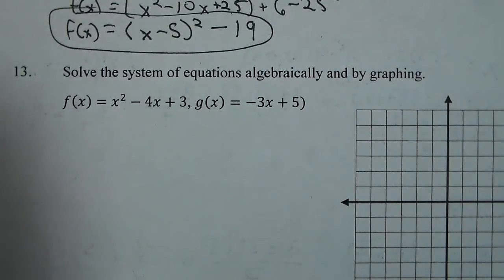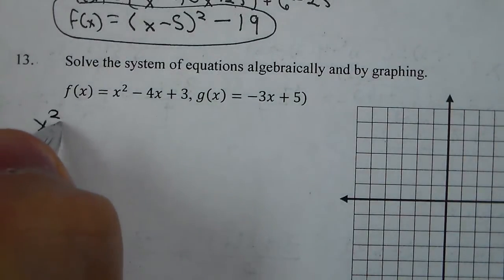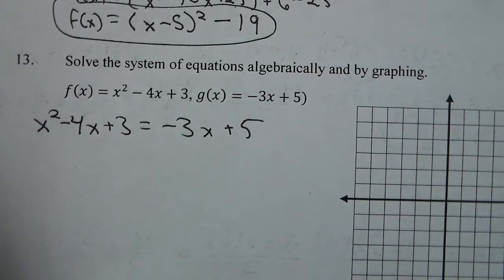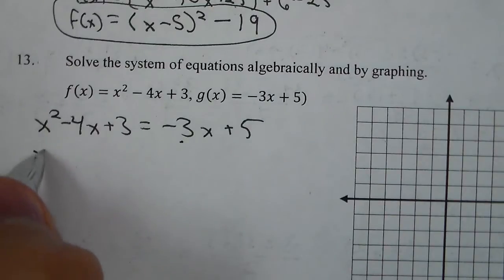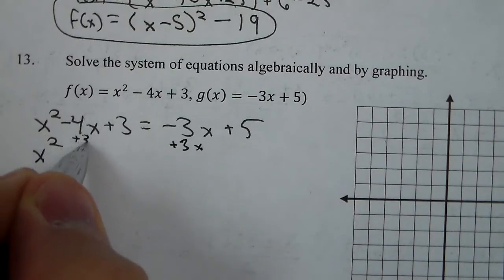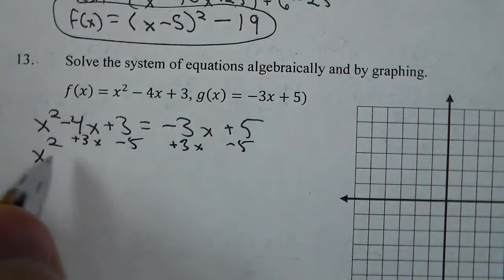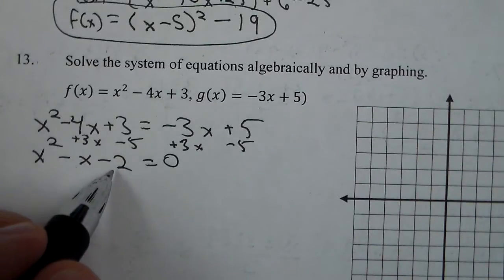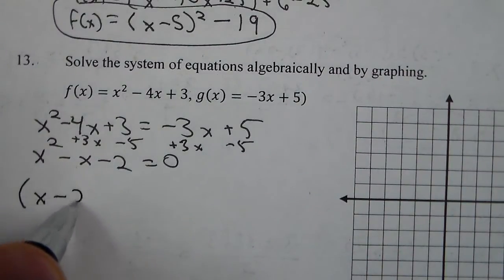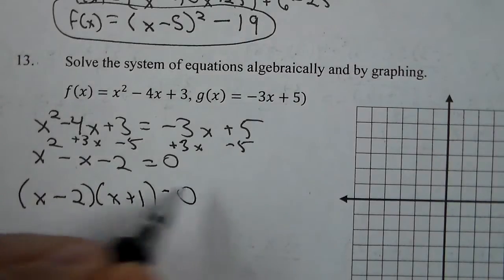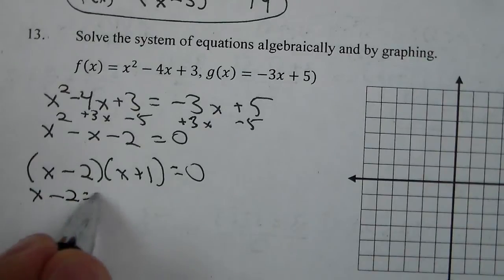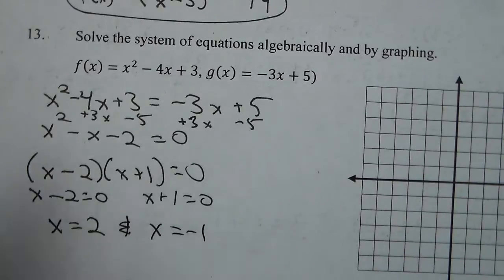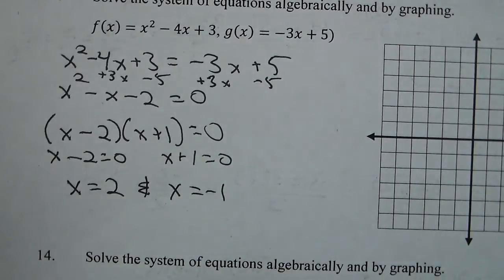For number 13, we need to solve both algebraically and by graphing. Algebraically: x squared minus 4x plus 3 equals negative 3x plus 5. I'll add 3x to both sides and subtract 5, giving x squared minus x minus 2 equals 0. This is factorable — it multiplies to negative 2 and adds to negative 1, giving factors of negative 2 and positive 1. That gives x minus 2 equals 0 and x plus 1 equals 0, so x equals 2 and x equals negative 1.